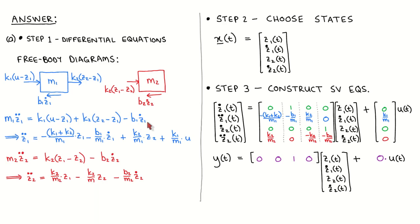We divide by the mass m1 in this step to make the third step easier. We again apply Newton's second law to the red object to write that the mass times the acceleration is equal to the forces acting on it. This is the second differential equation. We again divide by the mass in this line.